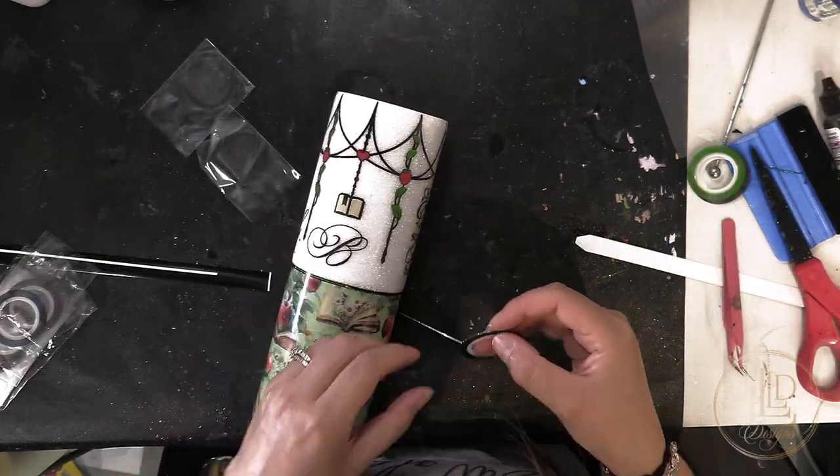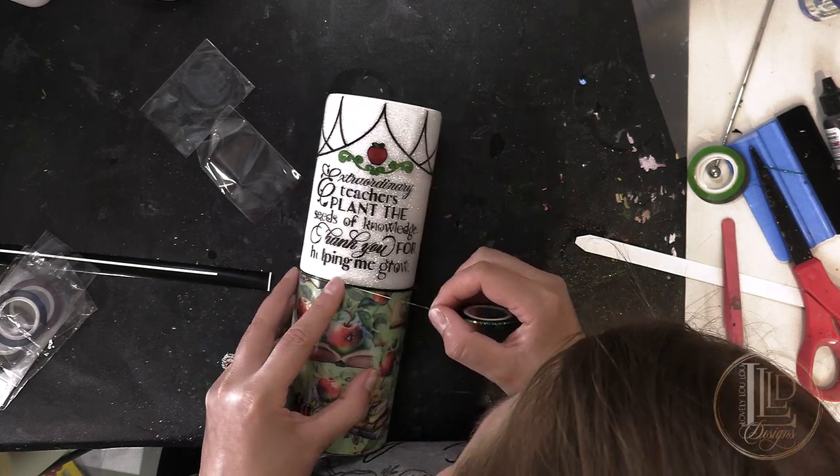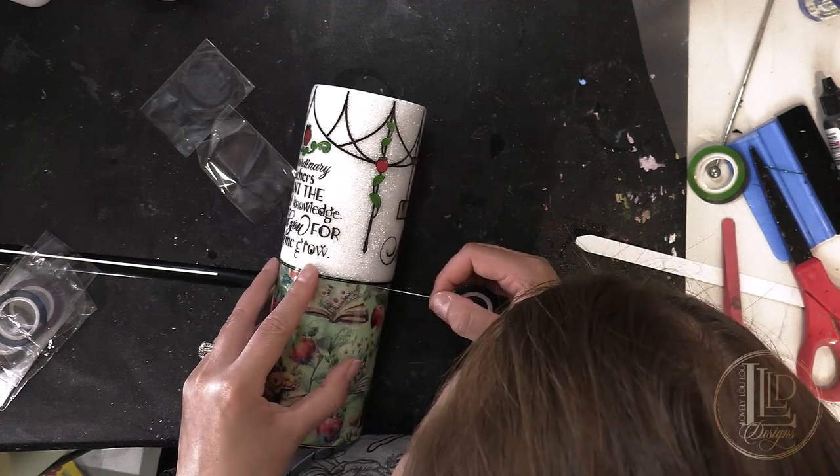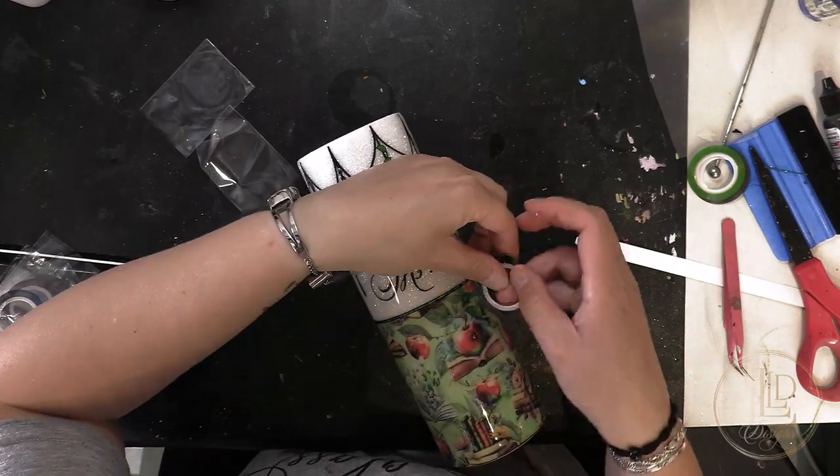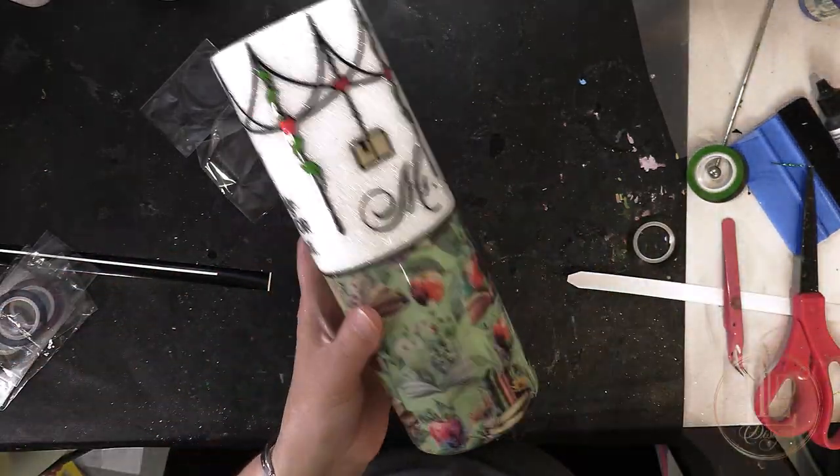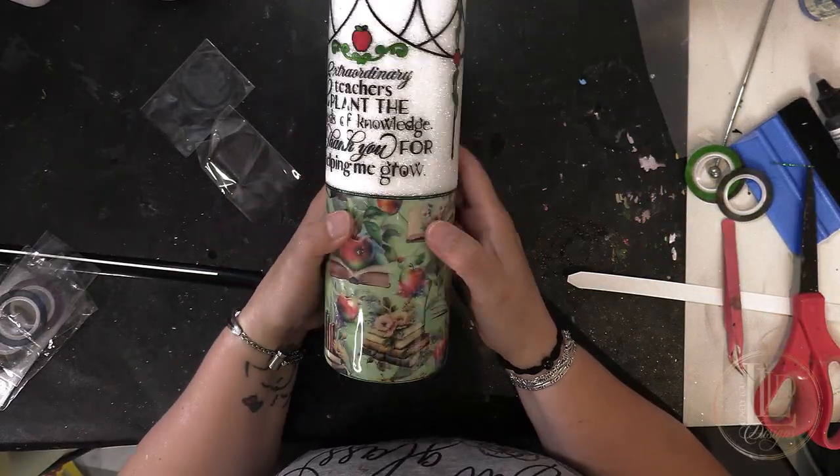For the pinstriping on the black band, I'm using a green holographic nail tape that complements the rest of the tumbler. I followed the same steps as before, lining the tape to the center of the black band this time. With all of these details now on, the tumbler is ready for final coats of epoxy and to be gifted to my son's teacher.